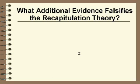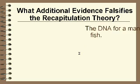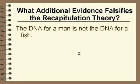Let's get some other evidence that falsifies the recapitulation theory. If you check the DNA of various things like a fish, salamander, turtle, and chicken, you'd find that the DNA is quite different. You also find that the DNA of the embryo is the same as the grown organism.